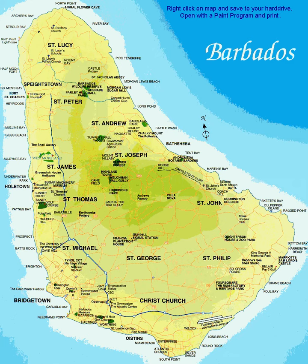It is flat in comparison to its island neighbors to the west, the Windward Islands. The island rises gently to the central highland region known as Scotland District, with the highest point being Mount Hillaby, which is 340 meters above sea level.